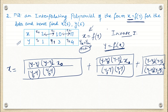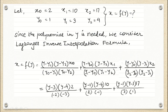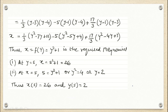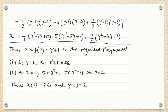Since we must build the polynomial first, y remains as is and we substitute all other values. After multiplying the factors and simplifying — collecting y² terms, y terms, and constant terms — the complete expression simplifies to x equals y² plus 1. This is the required polynomial.